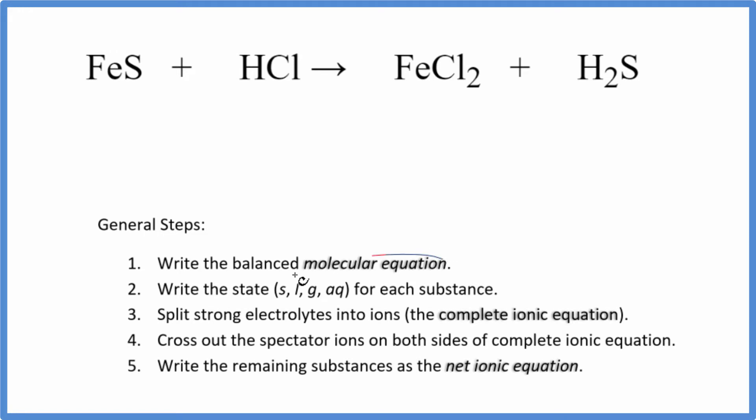First thing we need to do is balance our molecular equation here. I have two chlorine atoms here and just one here. Let's put a two in front of the HCl. Now I have two chlorines. I also have two hydrogens. That's fine. I have two hydrogens here. I have one sulfur and one iron on each side.